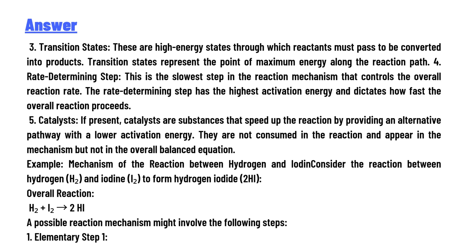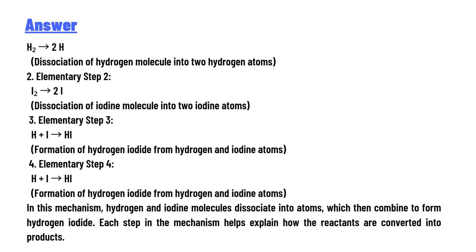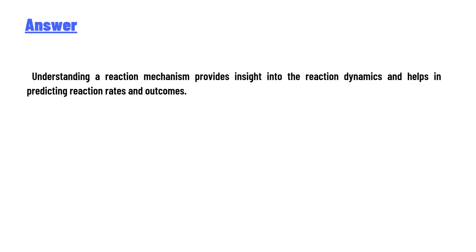Example mechanism: the reaction between hydrogen and iodine. Hydrogen and iodine molecules dissociate into atoms, which then combine to form hydrogen iodide. Each step in the mechanism explains how the reactants are converted into products. Understanding a reaction mechanism provides insight into reaction dynamics and helps in predicting reaction rates and outcomes.